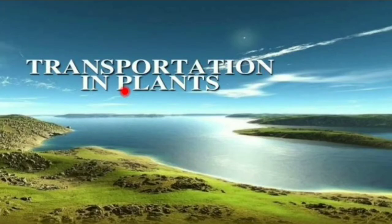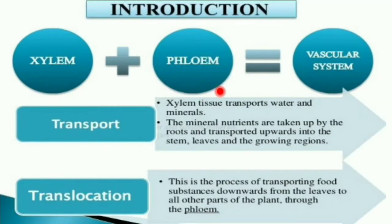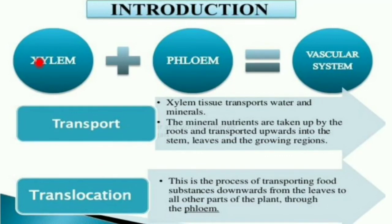Transportation in plants. At the end of this session you will be able to know how the water and minerals are transported from the root to the various parts of the plant. Xylem and phloem form the vascular system. Xylem tissue transports the water and minerals from the root to the various parts of the plant by the process called transpiration.